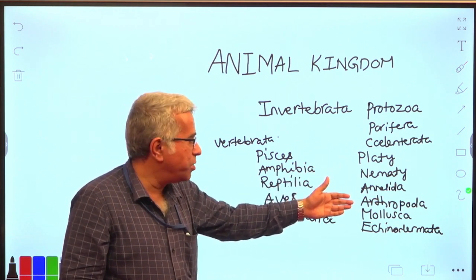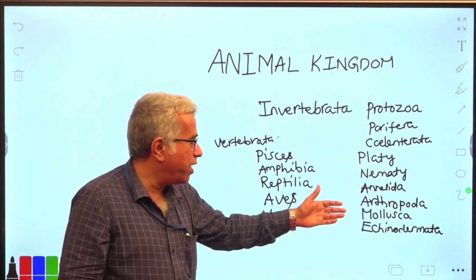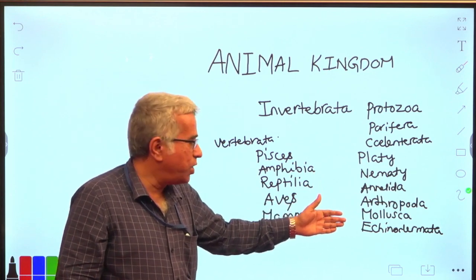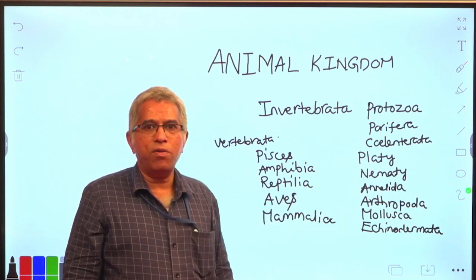Annelida which includes earthworms, arthropoda which is the biggest phylum, mollusca - animals with a shell, and echinodermata - starfish.